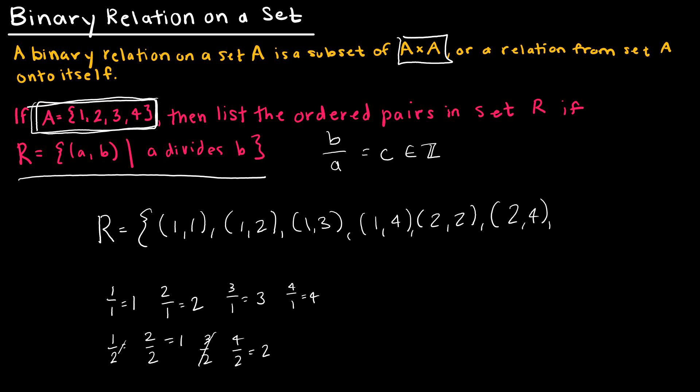So now let's look at 3. Could I take 1 divided by 3? No. 2 divided by 3? No. 3 divided by 3? Yes. And then of course 4 divided by 3? No. And then I have 4. So could I take 1 divided by 4? No. 2 divided by 4? No. 3 divided by 4? No. But 4 divided by 4 is an integer. So this is just a listing of all of the elements in that relation.